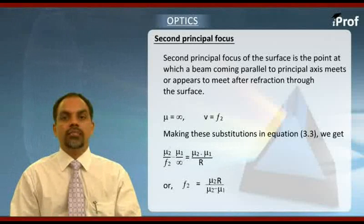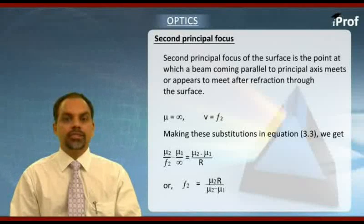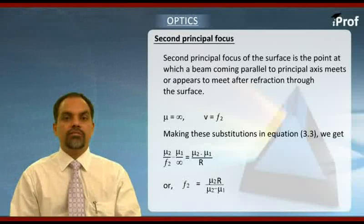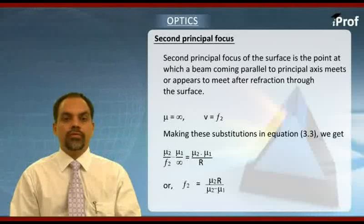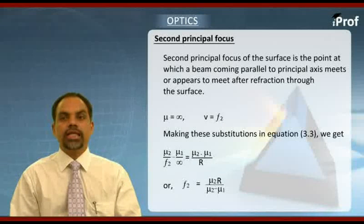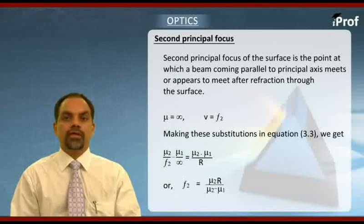We can develop a relation between these two focal lengths, that is first principal focal length and second principal focal length. Making use of the definition which we have derived just now, we get a very simple relationship: f2 divided by v plus f1 divided by u is equal to 1. This is a very simple relation relating first principal focal length and second principal focal length.